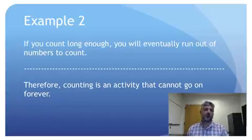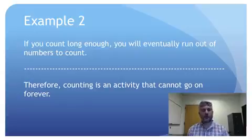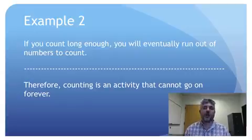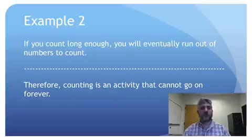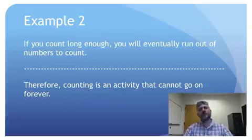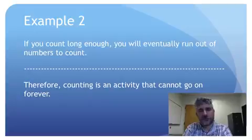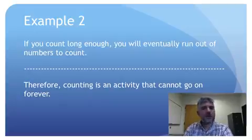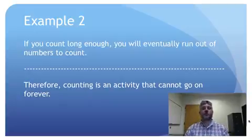So the premise can't be true, because it implies something inconsistent with the premise itself. Therefore the premise is false, and the argument is unsuccessful. We just did a reductio ad absurdum of the premise. But not every attempt at a reductio ad absurdum works.